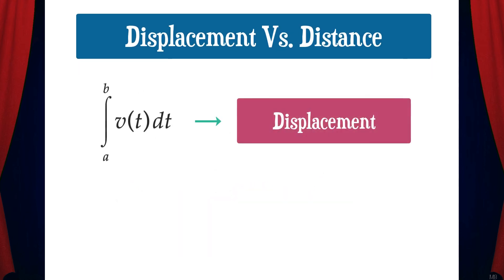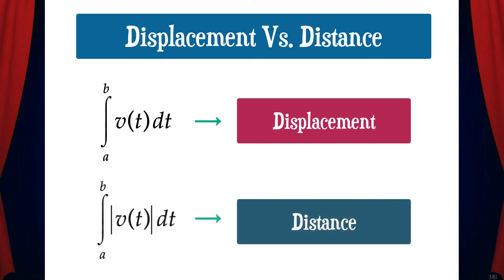So now we can summarize. The integral from A to B of v of t dt gives us the displacement of an object from A to B. But the integral from A to B of the absolute value of v of t dt gives us the total distance that the object travels from A to B.